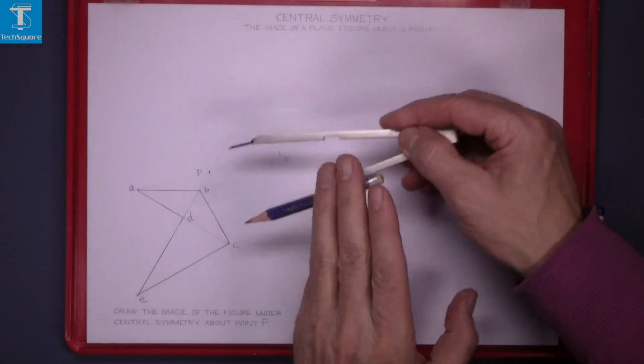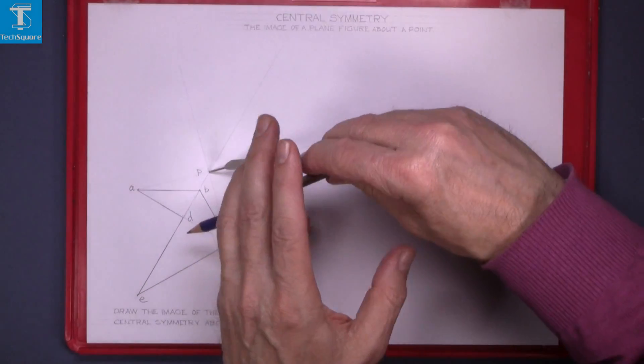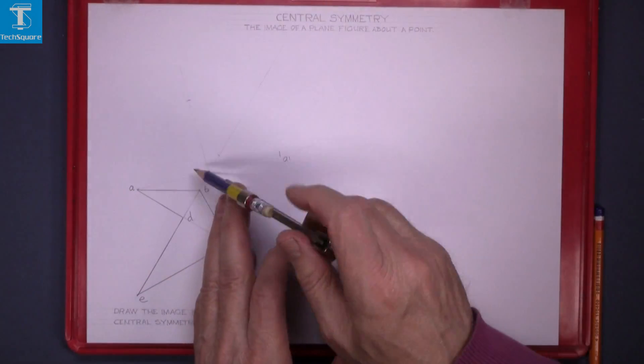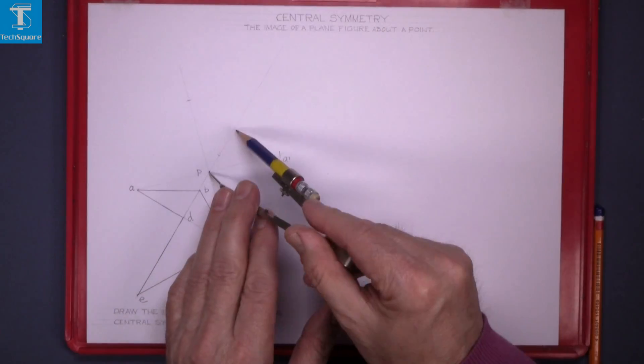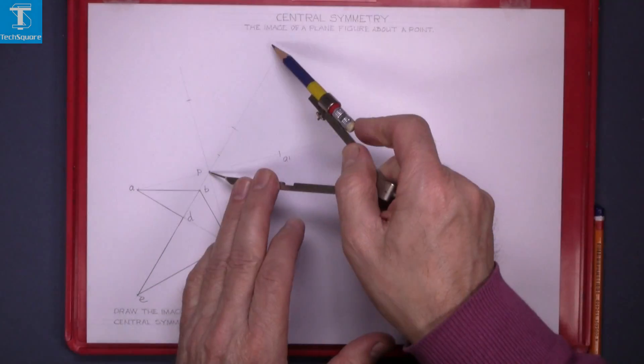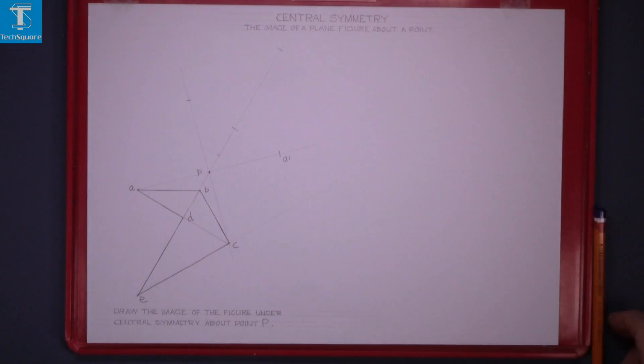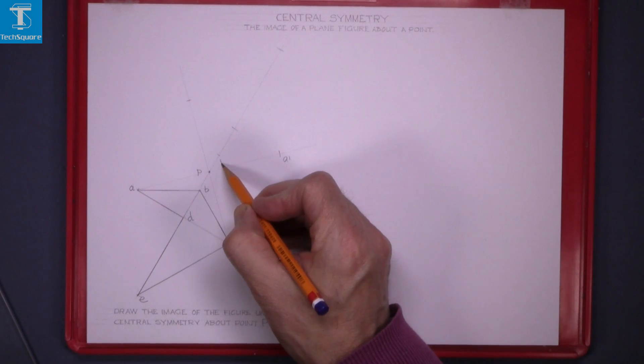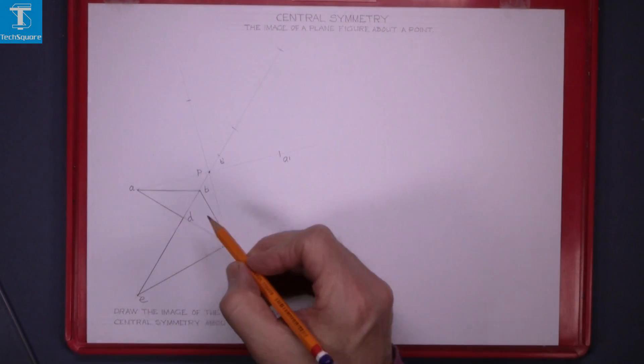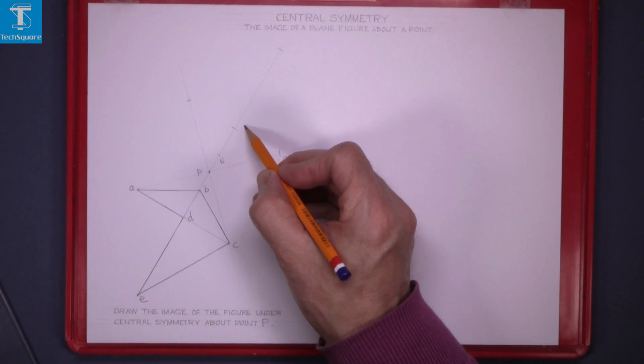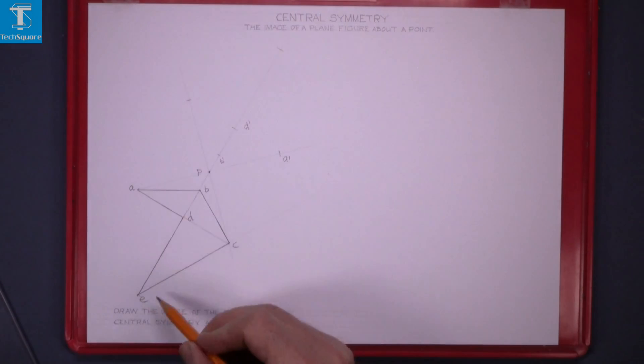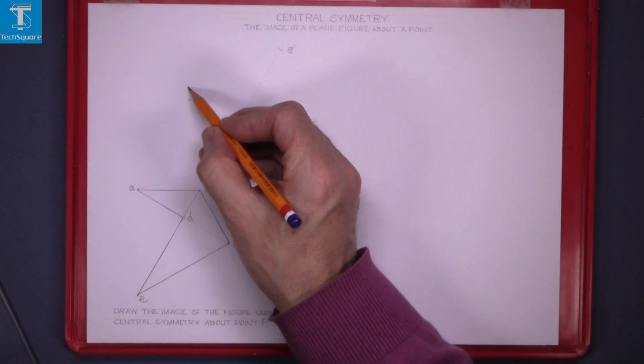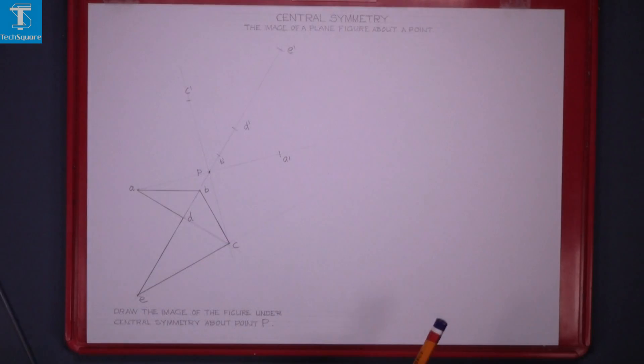With the compass set from P to C, mark off C, and then B, and then D, and last of all E. And that's the points: this one here is B1, D1, and E1, and this point out here is C1.